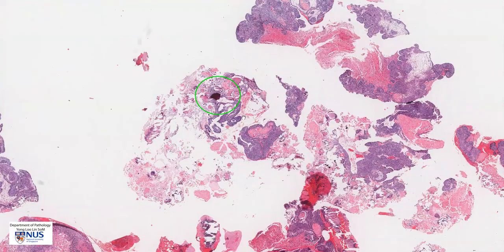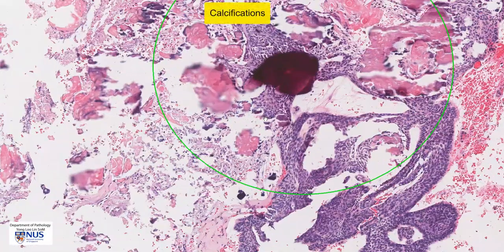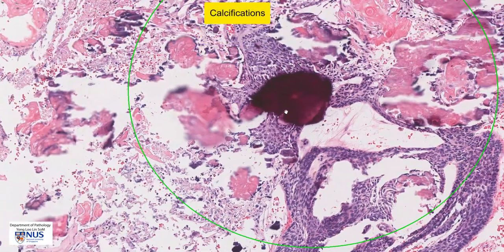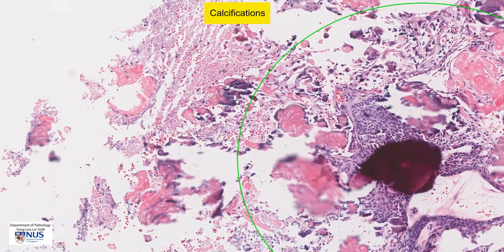This tumor also tends to sometimes form calcified areas or have calcifications. You can see this reddish-purplish chunk of calcified material here. Around it, there is some evidence of this fragmentation or fracturing, and this happens because it's very difficult to cut thin sections as we need to for histology when there is calcification in the tissue.